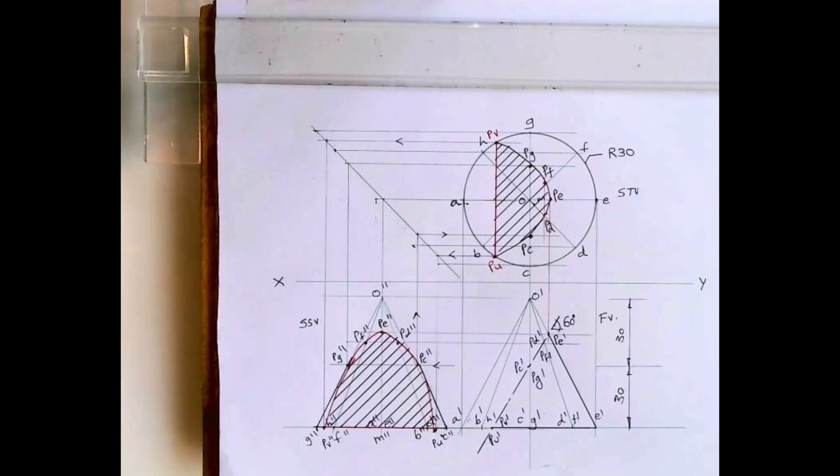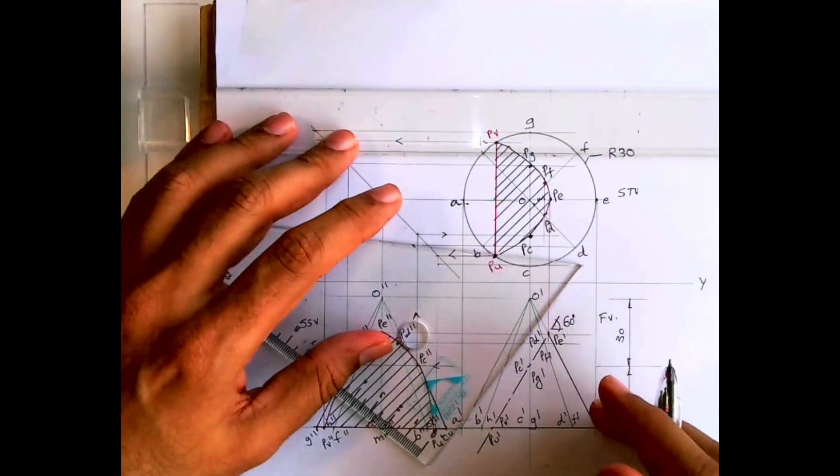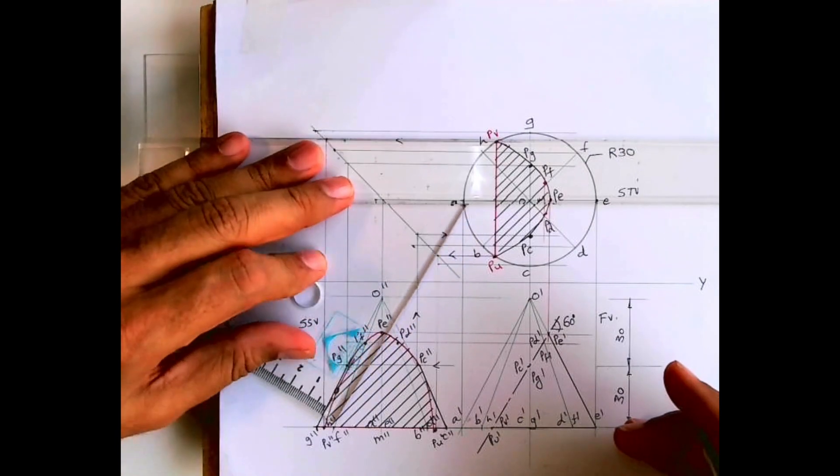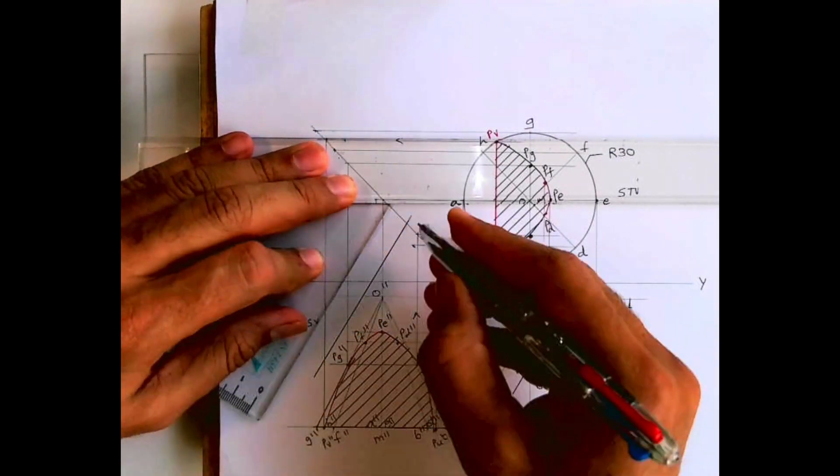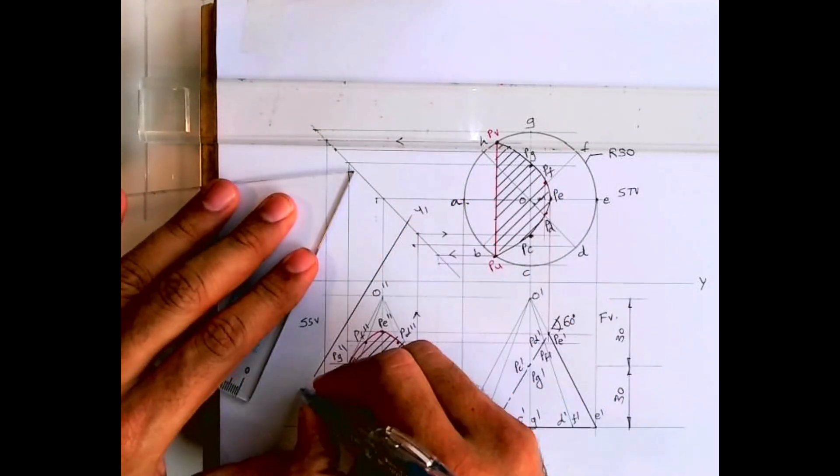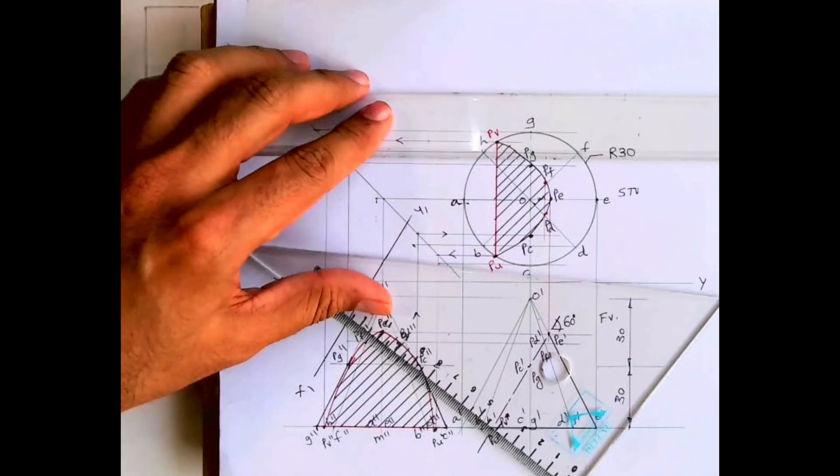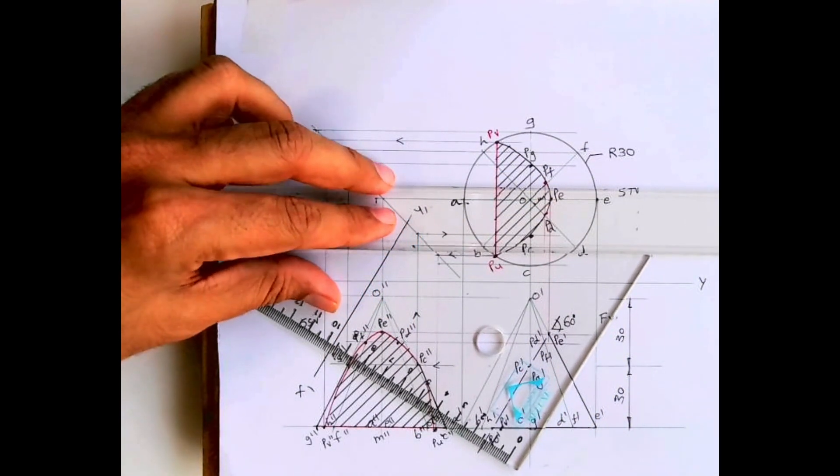Welcome to technical drawing. Today we are going to solve this sum. We are going to draw auxiliary top view. So see, we already have the sum front view, top view is given. We'll draw auxiliary plane x1y1, then we'll project points from all these points like a dash, b dash. From all these points we will draw lines.